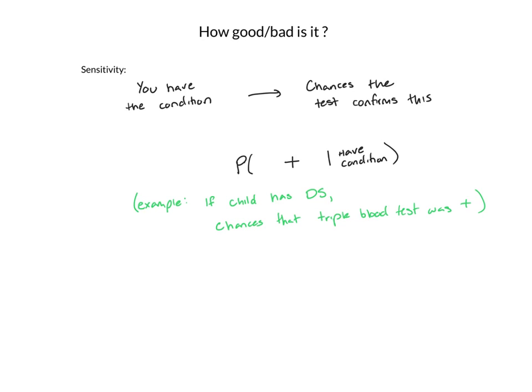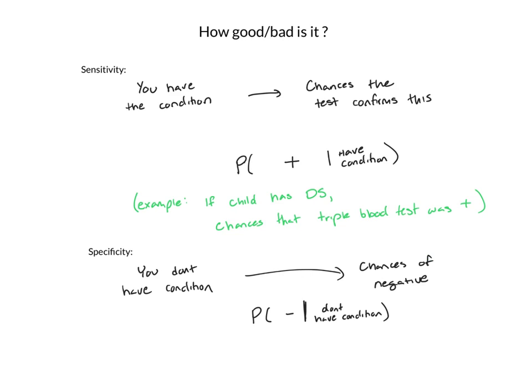Specificity, on the other hand, is kind of the opposite. Specificity says if you don't have the condition, what are the chances you get a negative? For instance, in contagious disease testing — let's say tuberculosis — specificity would say if you don't have tuberculosis, what are the chances that a test gives you a negative?